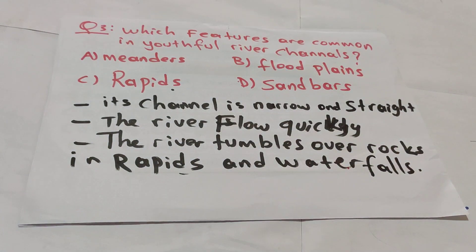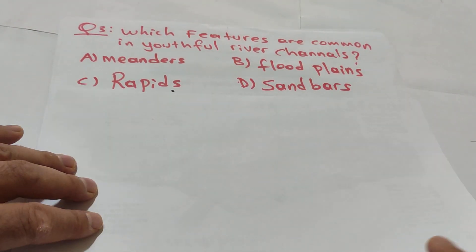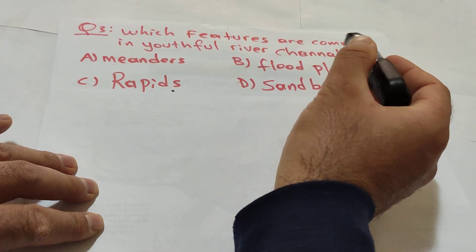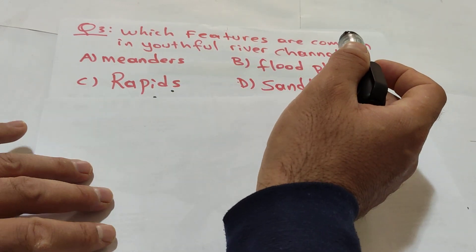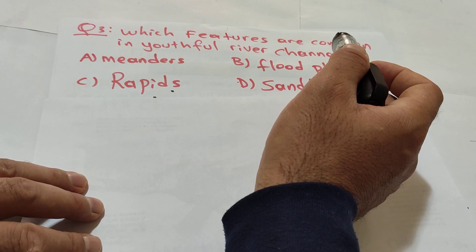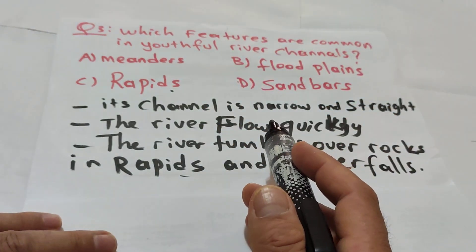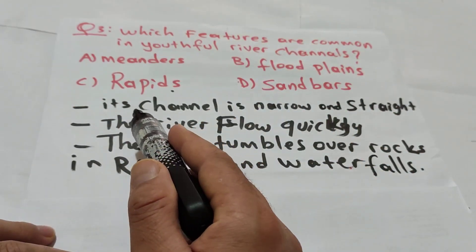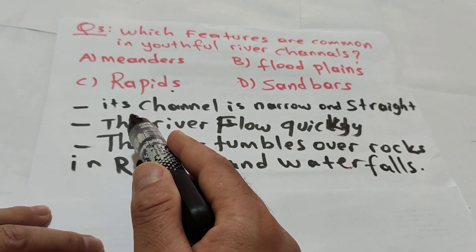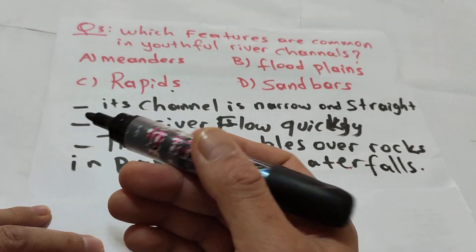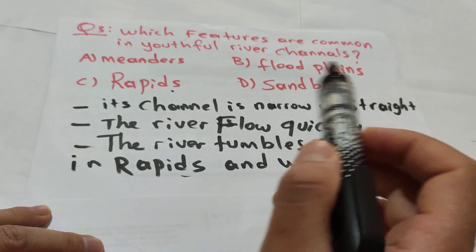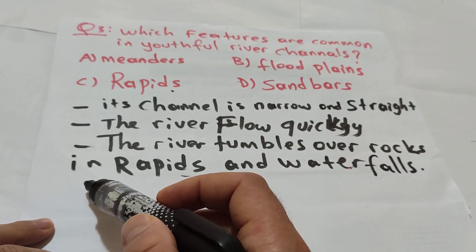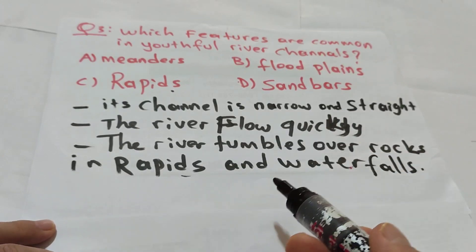Question: which features are common in youthful river channels? As you remember, youthful rivers are young rivers. So what are properties of youthful rivers? Its channel is narrow and straight, the speed of water very fast, the river falls off quickly, the river tumbles over rocks in rapids and waterfalls. The answer will be C.